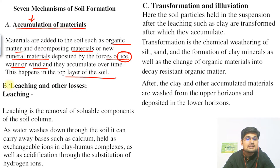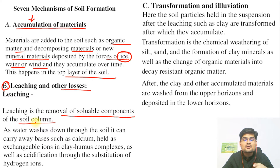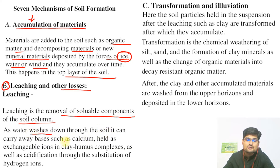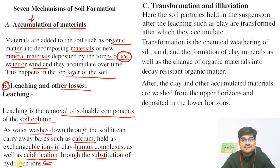The second process is leaching. Leaching is basically the removal of soluble components of the soil column. Water washes down the soil nutrients and carries away the bases such as calcium held as exchangeable ions in the clay-humus complexes, and is also responsible for acidification through the substitution of various ions. So leaching is another important process.